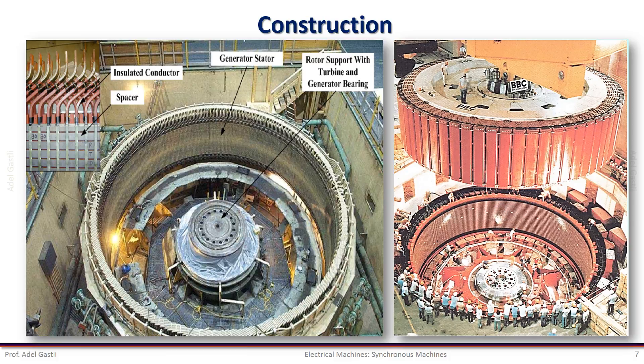These figures show an example of a stator of a large hydro generator. Notice how big these machines can be. This stator is very large but very short because of the low speed of rotation of the salient pole rotor.